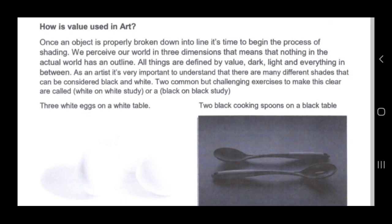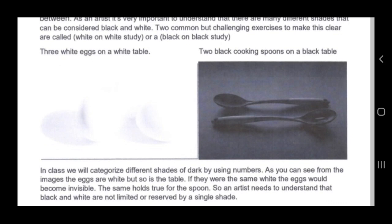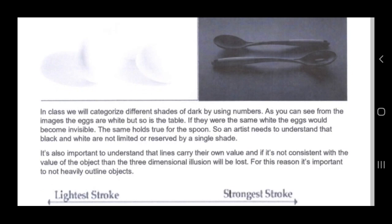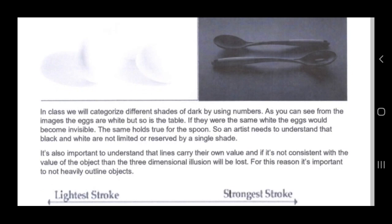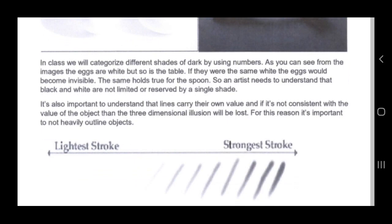As an artist it's very important to understand that there are many different shades that can be considered black and white. Two common but challenging exercises to make this clear are called a white on white study or a black on black study. On the left image you can see eggs placed on a white table; on the right image you can see two black cooking spoons on a black table. These exercises are usually carried out at the college level and they really help you understand the subtleties between different values.